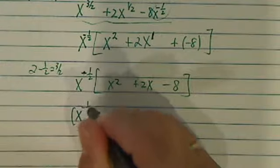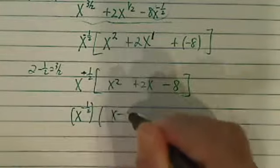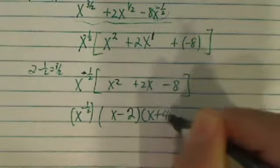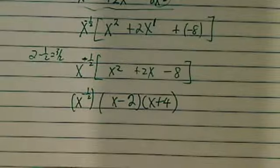So I have x to the minus half here, and then I have x minus 2, and x plus 4. So here's the factor form.